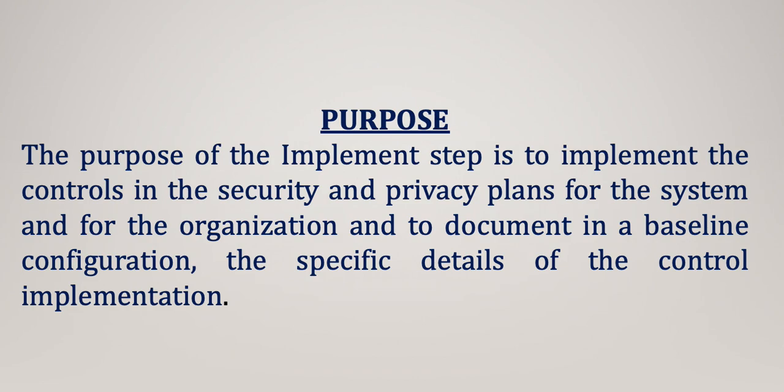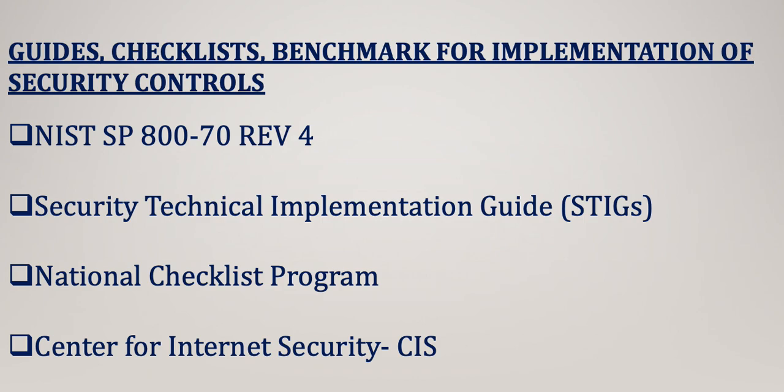Let's look at some guidelines, checklists, and benchmarks for implementation of security controls. The NIST publication for implementing security controls is NIST 800-70 Revision 4. In this publication, you will find the National Checklist Program template, which enumerates the controls and areas that need to be configured and implemented on the system — irrespective of the application or kind of system you are working on.